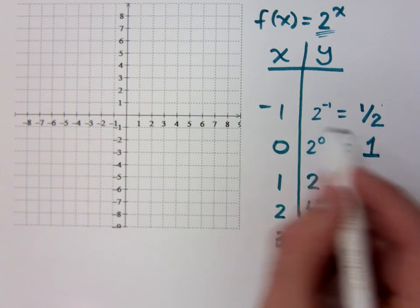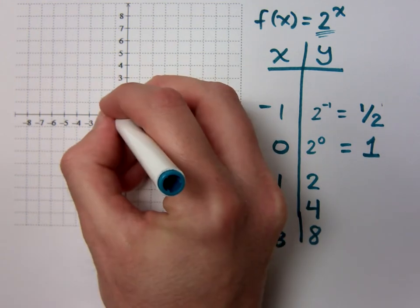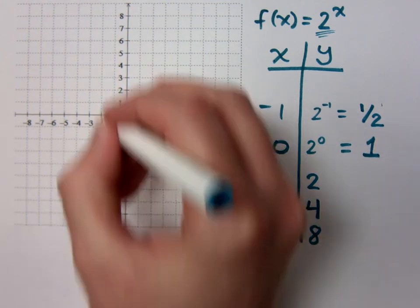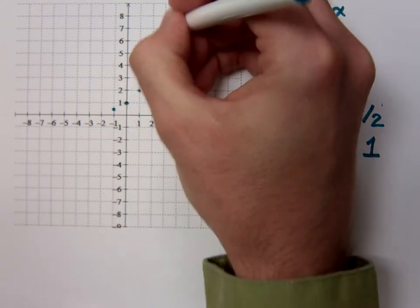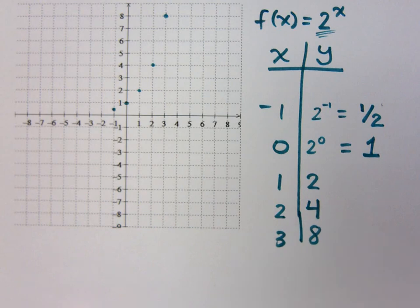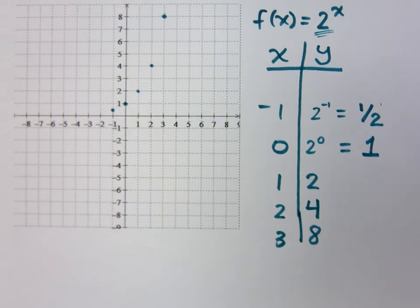If I plug in, if I look at negative 1, 1 half. Here's negative 1, 1 half. Here's 0, 1, then 1, 2, then 2, 4, then 3, 8. Right?